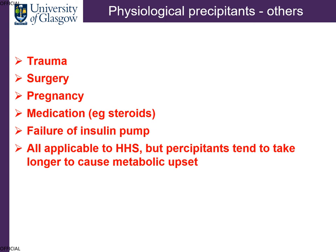All the above precipitants are also applicable to hyperosmolar hyperglycemic state, although patients with type 2 diabetes will not be on an insulin pump. Precipitants generally take a bit longer to cause the metabolic upset. Whilst DKA might result from only a couple of days of illness or not taking insulin, with hyperosmolar hyperglycemic state it may be well over a week before patients present unwell.